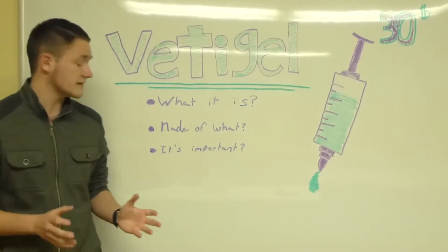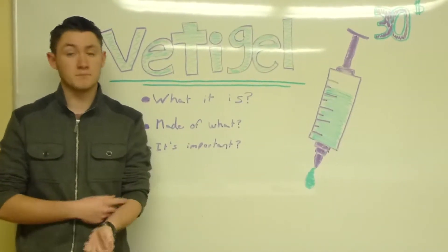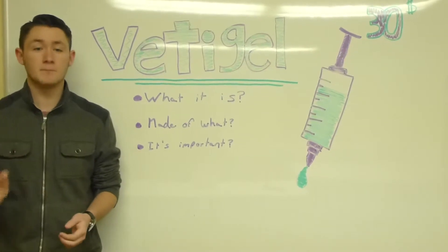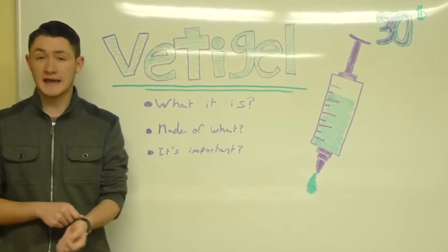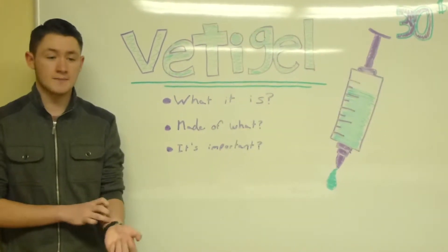And what I mean by that is, when you take Vettigel and apply it to a wound, it's doing two things. It's creating a double bond, not only with the skin in a mechanical way, but also in a chemical way.